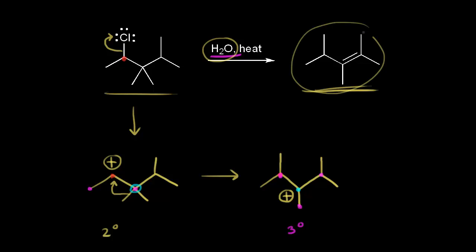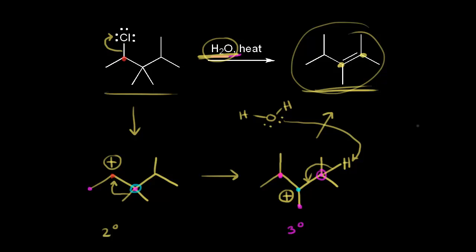Looking at our product, the double bond formed between two specific carbons, so we need to take a proton from the carbon in magenta on the top right. There's one hydrogen bonded to that carbon, and water functions as our weak base. A lone pair of electrons on the oxygen takes that proton, and those electrons move in to form our double bond, giving us our product and completing the E1 mechanism.